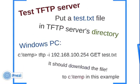You can test the TFTP server by putting a text file — I put a test.txt file — into your TFTP server's directory. Then from a Windows PC issue the command: tftp -i, then the IP address of your TFTP server (in this example 192.168.100.254), then GET test.txt. It should download the file — in this case to C:\temp in this example — so you can confirm it's working.